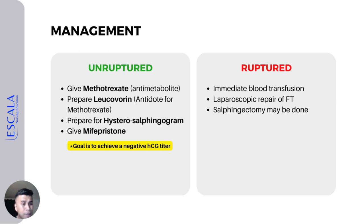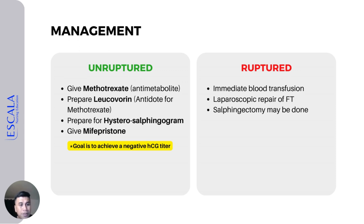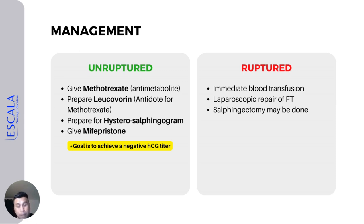For ruptured ectopic pregnancy, management includes both medical and surgical approaches. Immediately, we start IV infusion to prevent hypovolemic shock, and we give blood for immediate blood transfusion. Before transfusion, we perform blood tests including CBC, hemoglobin and hematocrit count, and cross-matching of blood.